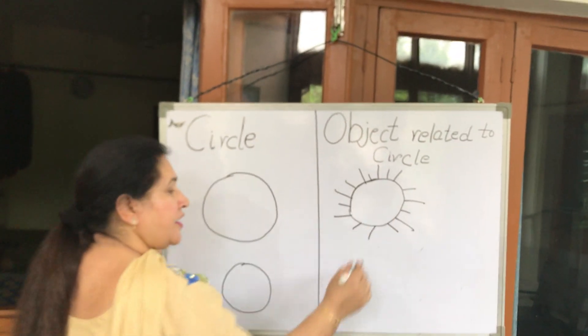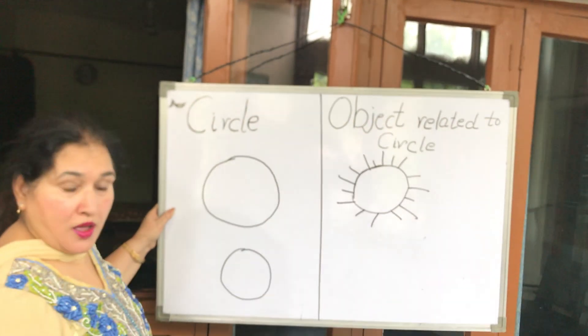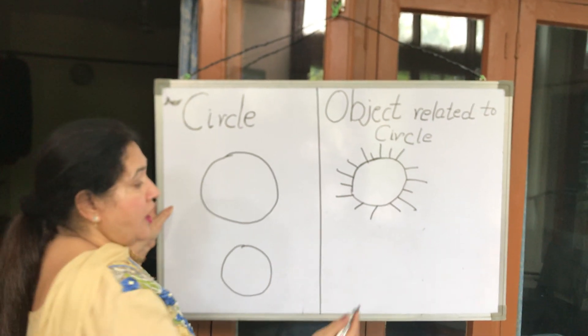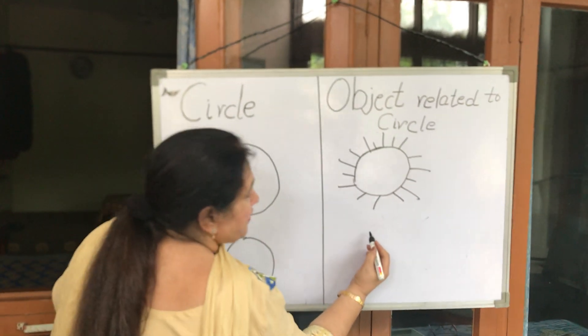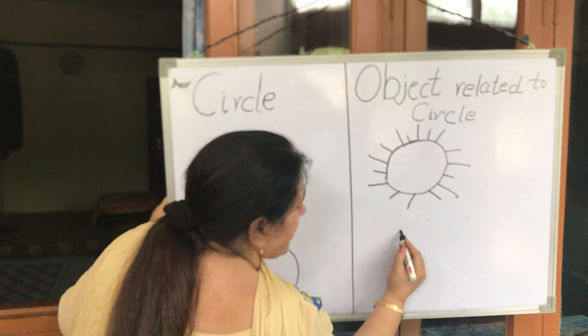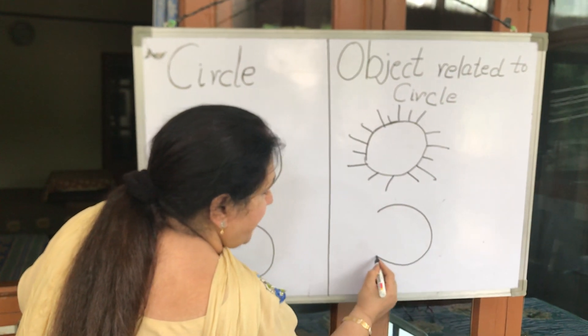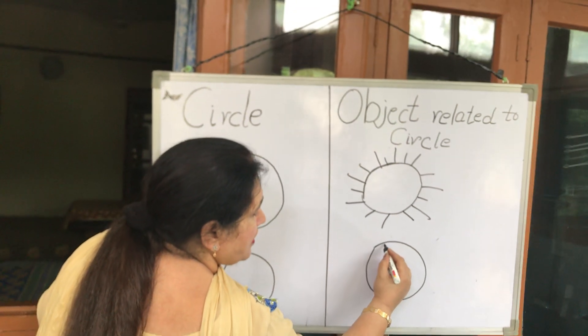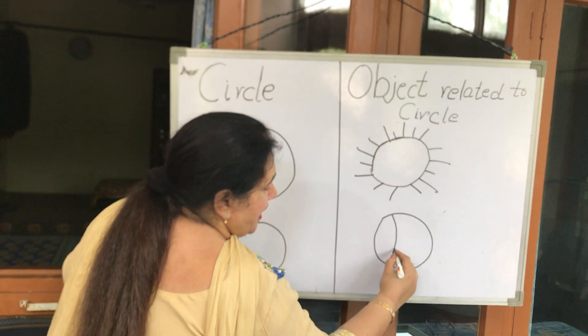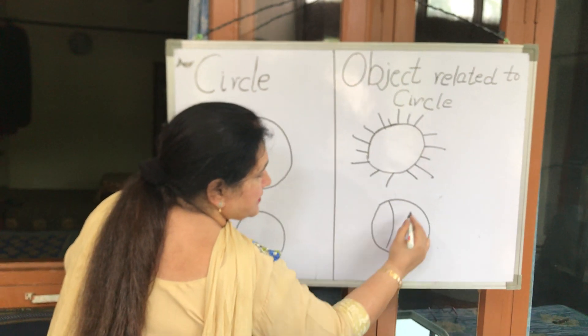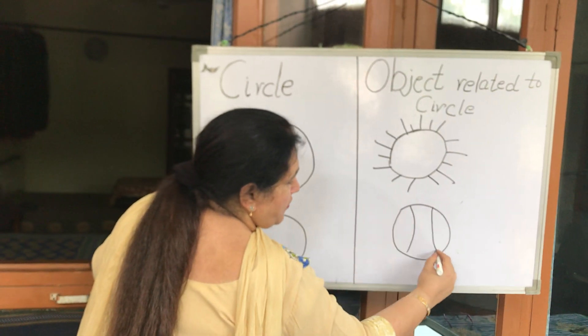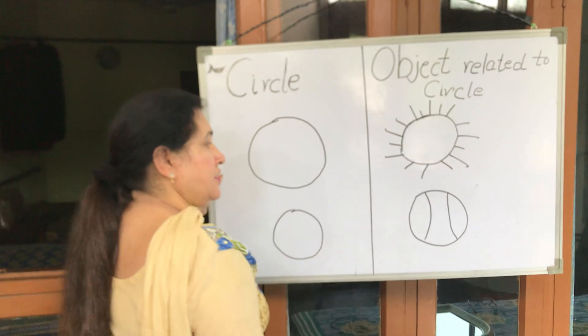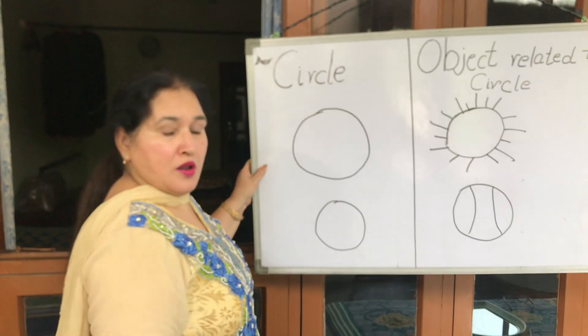And color it with yellow color. Now we will draw a ball. That is also half circles here. This is a ball. One line from this side and one from here. This is a ball.